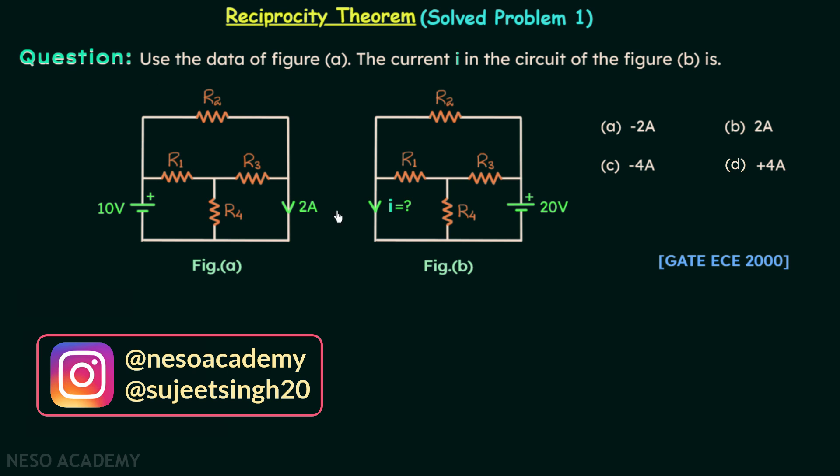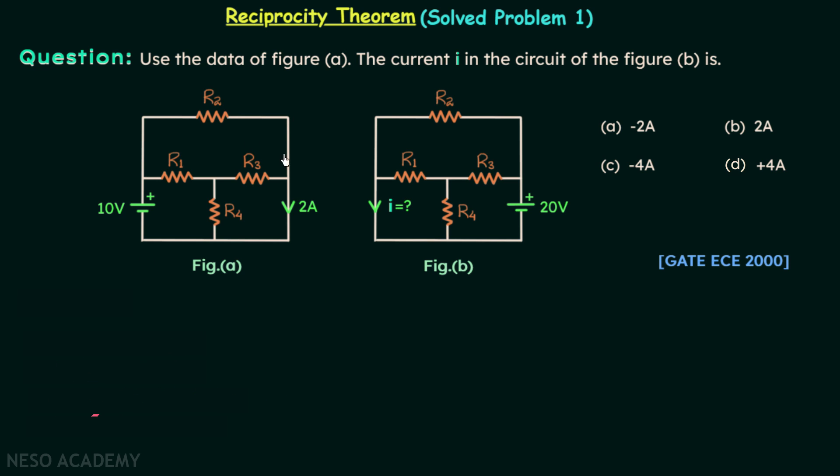Use the data of figure A. This is figure A. Current i in the circuit of figure B is shown here. This is figure B. We need to find current i with the help of data in figure A. There are 4 options and we need to choose one correct option.